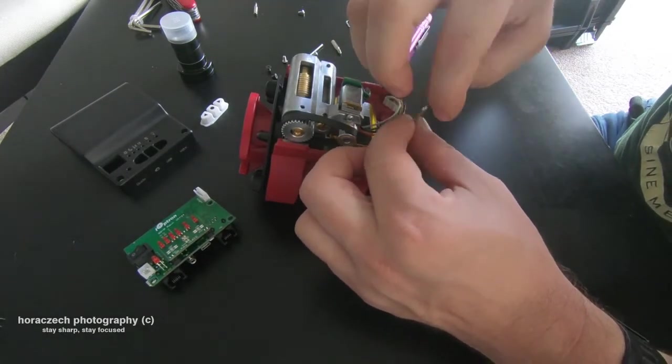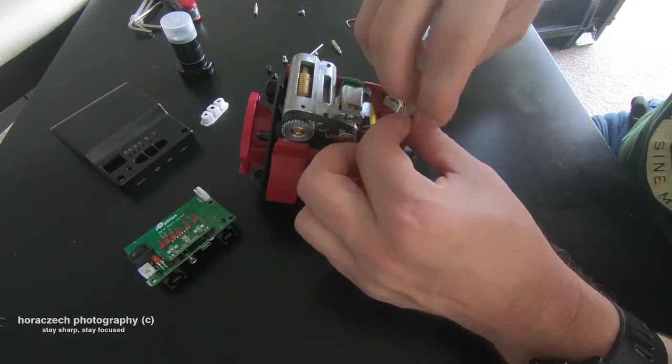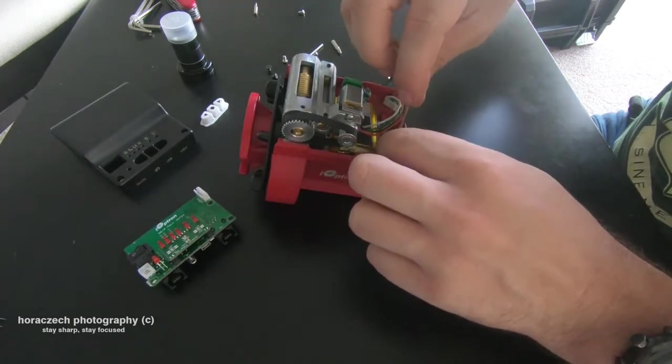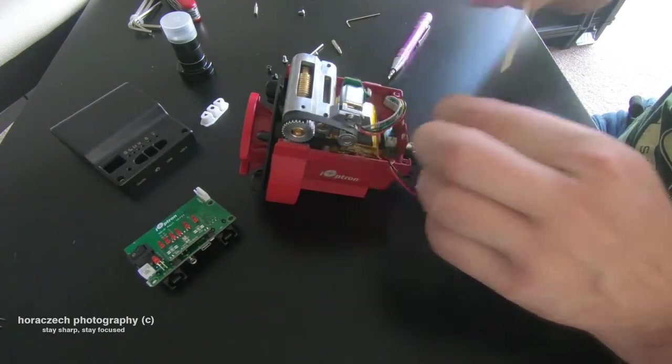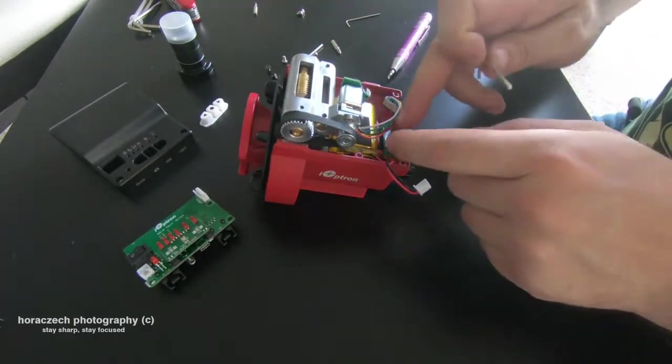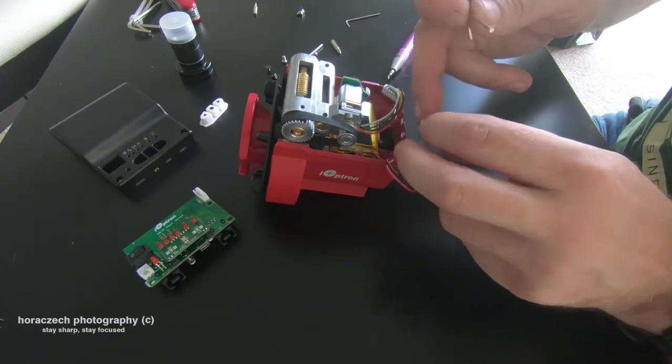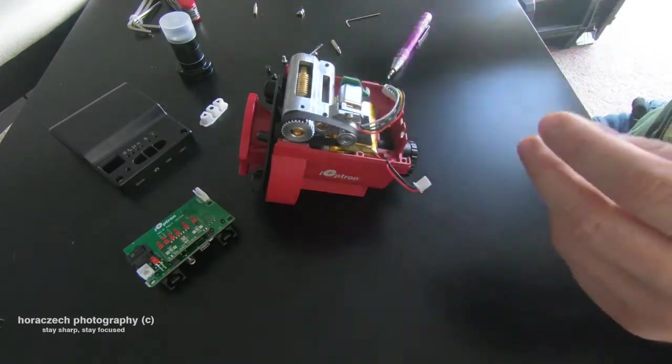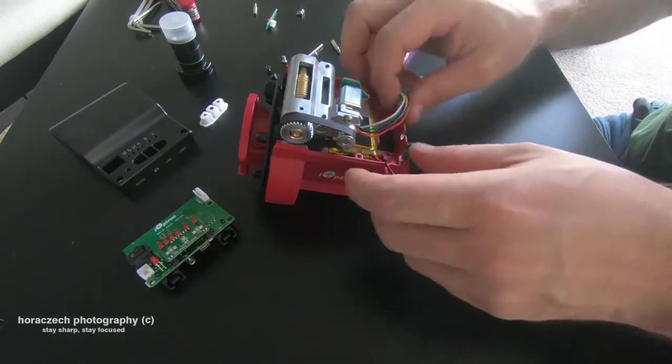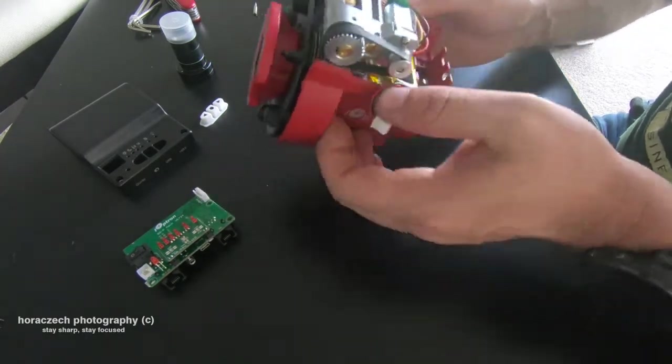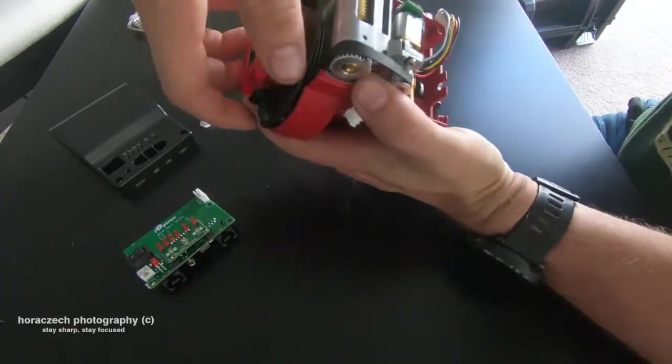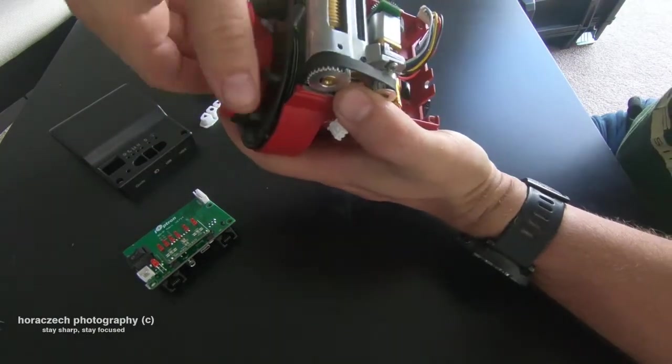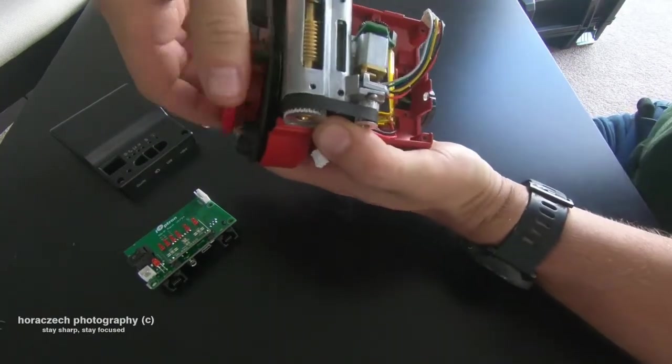But whatever, the connector is on the left side. If you're not sure, you can take a picture of every part you're taking apart, just to make you feel more secure about knowing how to put everything back. Okay. Now when we have that out, we're gonna loosen the clutch, so the scope is freely moving.